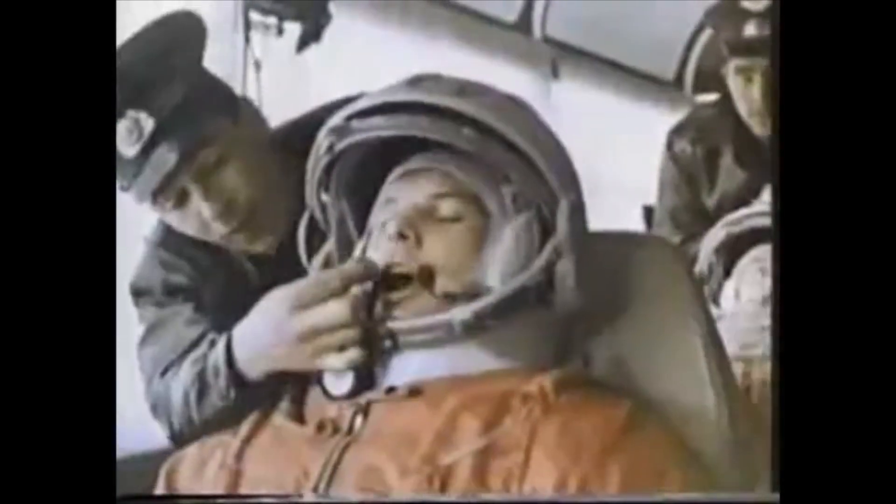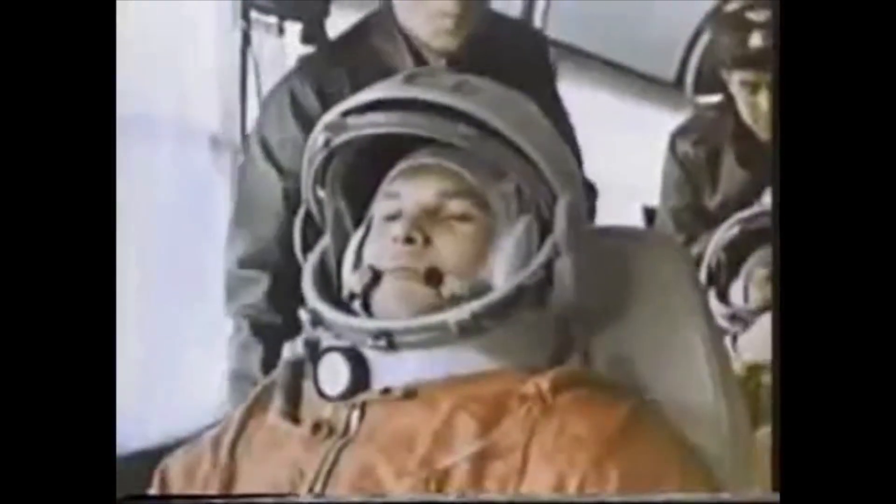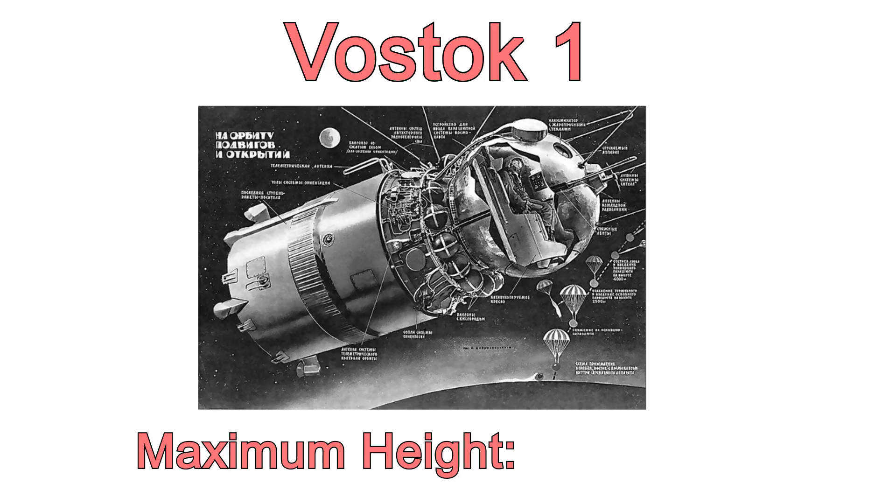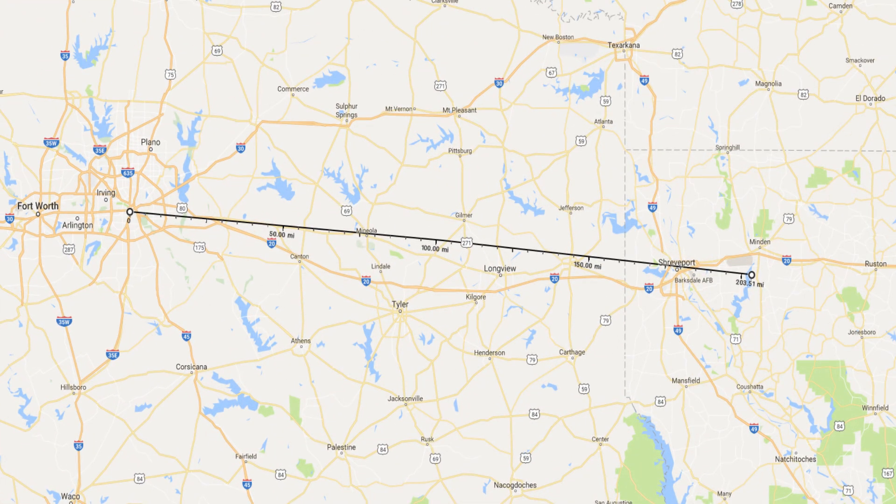On April 12th, 1961, humanity finally became a spacefaring species when Soviet cosmonaut Yuri Gagarin blasted off from a cosmodrome in southern Kazakhstan, starting his 105 minute journey beyond the reach of Earth. Gagarin's Vostok 1 spacecraft orbited the Earth once, reaching a maximum height of 327 kilometers. That's just over the distance from Dallas, Texas to Shreveport, Louisiana.